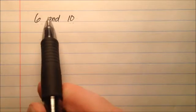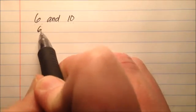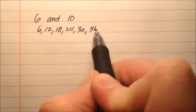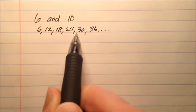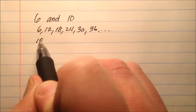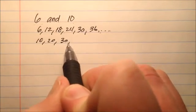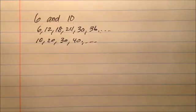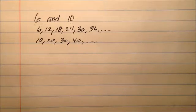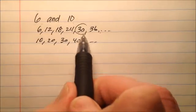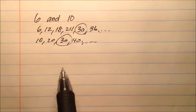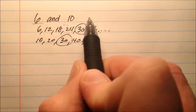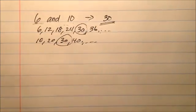Remember that multiples are just like 6 and then add 6 to that and add 6 to that. So you could say 6, 12, 18, 24, 30, 36, and so on — these are multiples of 6. You could also have multiples of 10, and they keep going forever. The idea of least common multiple is you're looking for the smallest number that is a multiple of each. So 30 and 30 — the least common multiple of 6 and 10 is going to be 30.